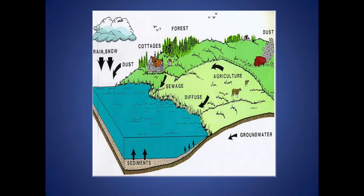This figure gives a good overview. We get nutrients coming in from rain, snow, precipitation, and dustfall. We get it coming from cottage areas, natural areas, and agricultural areas — both direct and diffuse input. We have sewage coming in, groundwater bringing in nutrients. And finally, one of the more important parts of nutrient budgets in Alberta is from the sediments. Nutrients go into the lake and sit in the sediments but get recycled back into the water over time as well.